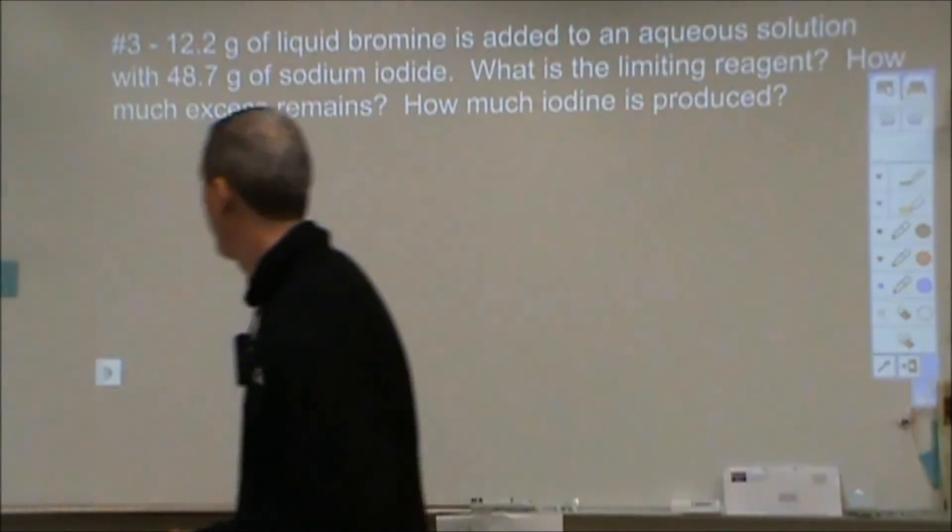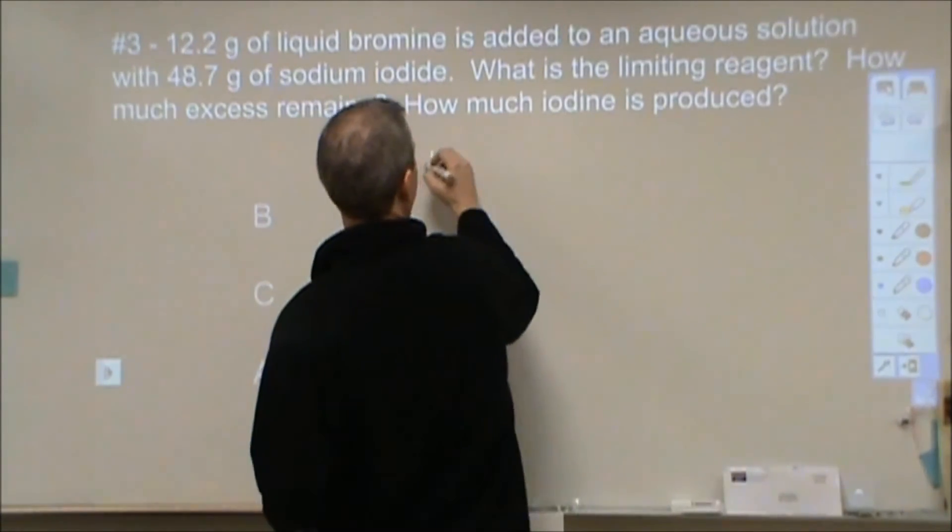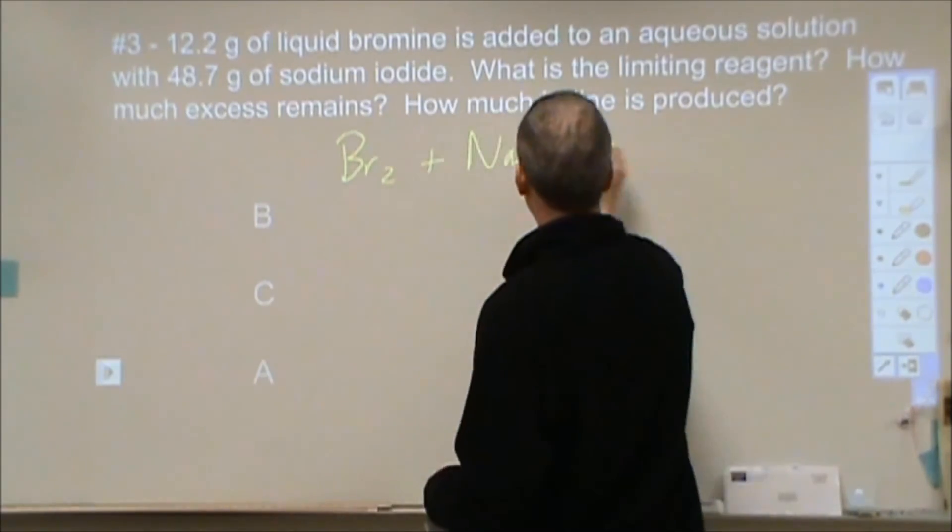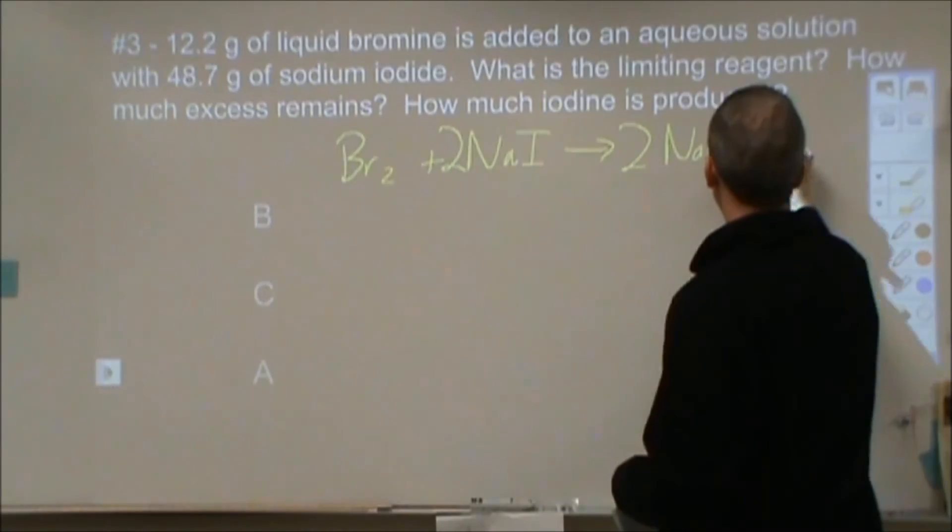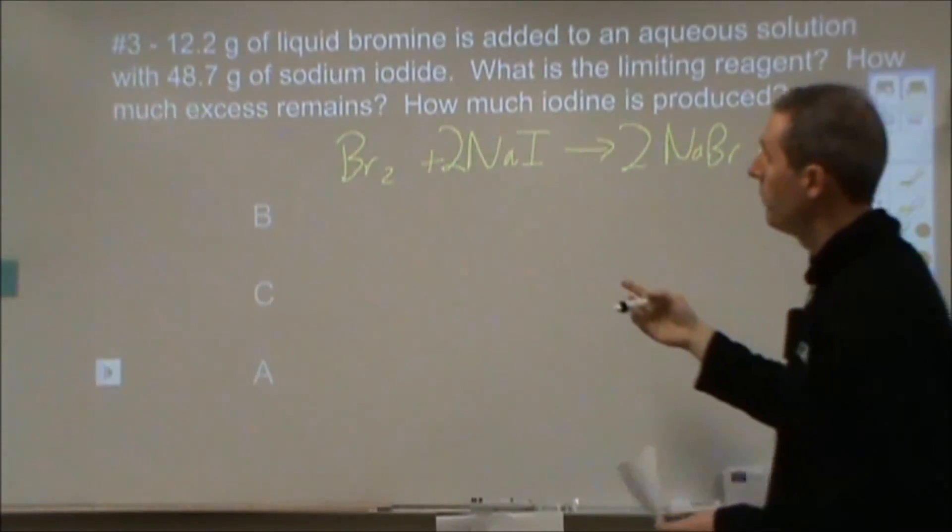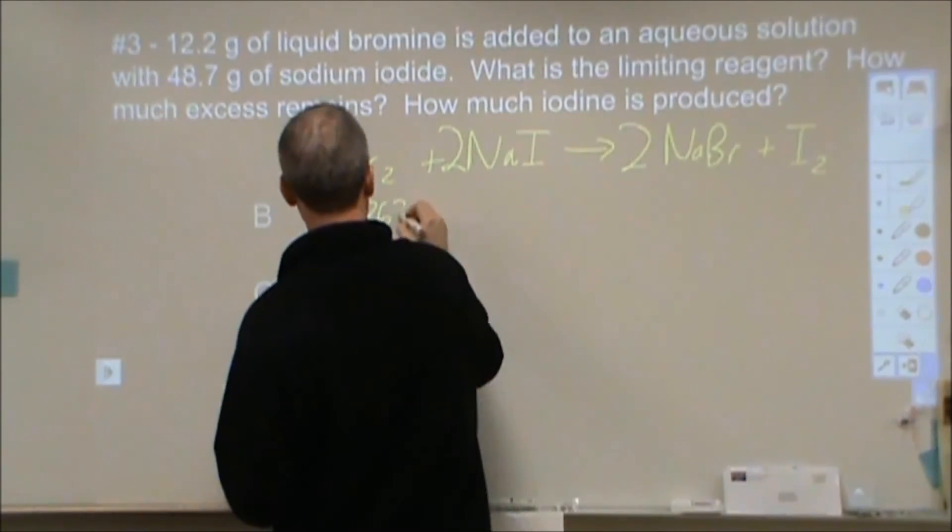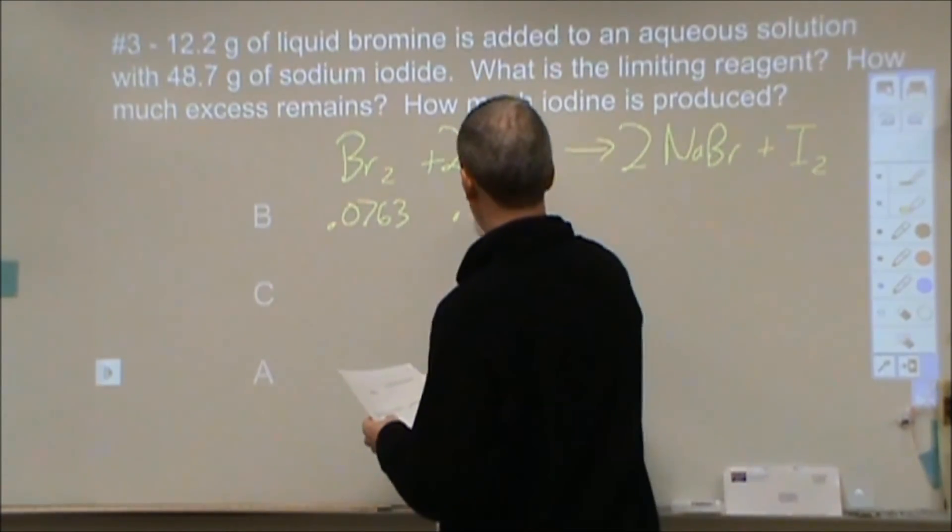So, bromine is added to sodium iodide. We'll see a single replacement reaction to produce sodium bromide and iodine. Okay, so our 12.2 grams of liquid bromine is 0.0763 moles. And our sodium iodide is 0.325 moles.